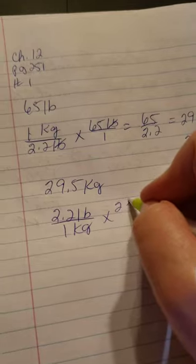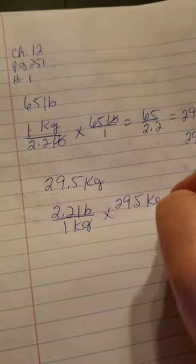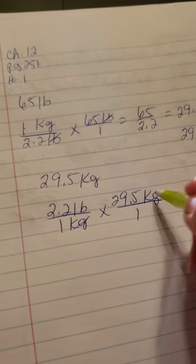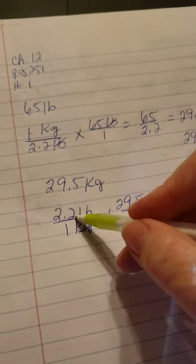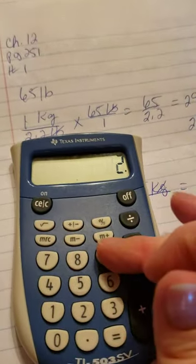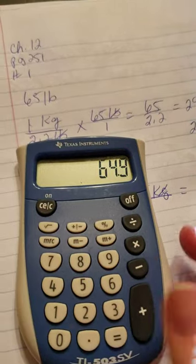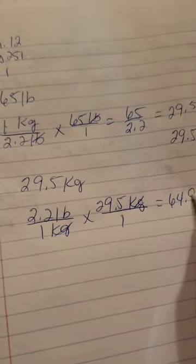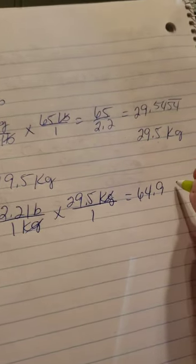We have 29.5 kilograms. Let's put that on top over one to make it a fraction. The kilograms are going to cancel and we have 2.2 times 29.5. When we calculate that out, 2.2 times 29.5, we get 64.9 pounds.